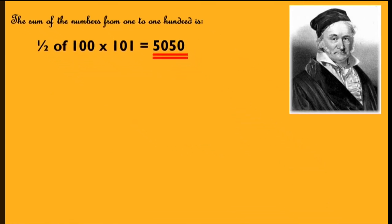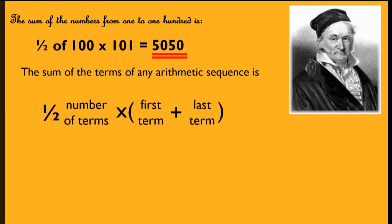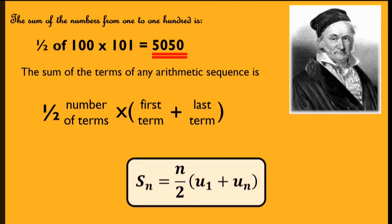Gauss then reasoned that if this works for the most basic number sequence, it should work for any arithmetic sequence. So the sum of the terms of any arithmetic sequence is always half of the number of terms multiplied by the first term plus the last term. We write this formally as: the sum of n terms equals n over 2, multiplied by the first term u₁ plus the last term uₙ. That formula can help you find the sum of any arithmetic sequence.